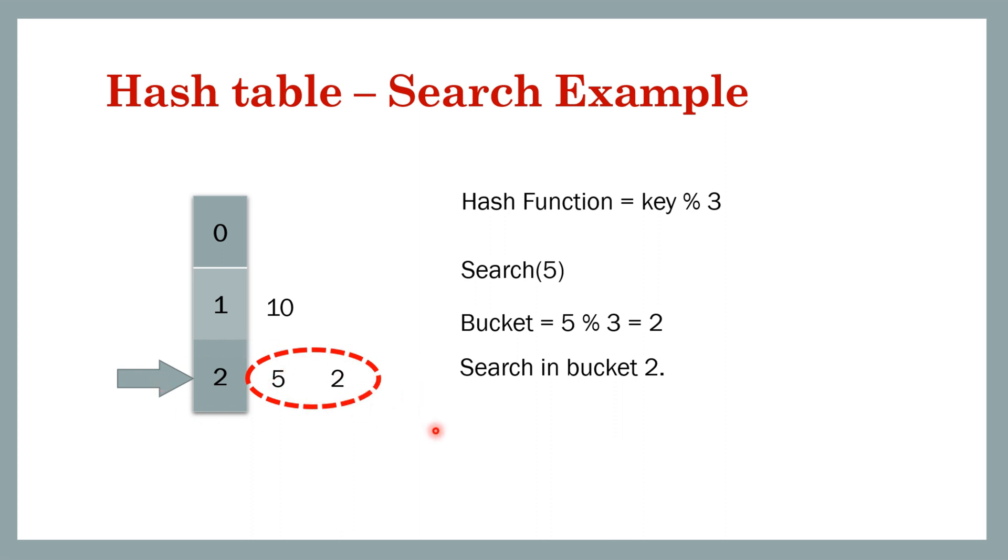Let's say we want to search for 20. 20 modulo 3 will be 2, so it will search in this bucket but it will not find 20, so it will return false.